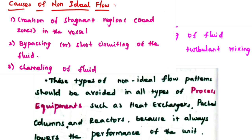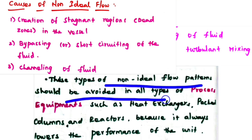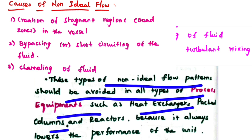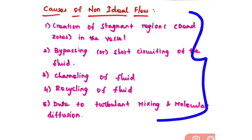We have to avoid these types of non-ideal flow patterns in all types of process equipment such as heat exchangers, packed columns, and reactors, because it always lowers the performance of the unit. It reduces the conversion of your reactant into the product. Later in this video, we will discuss about these factors.